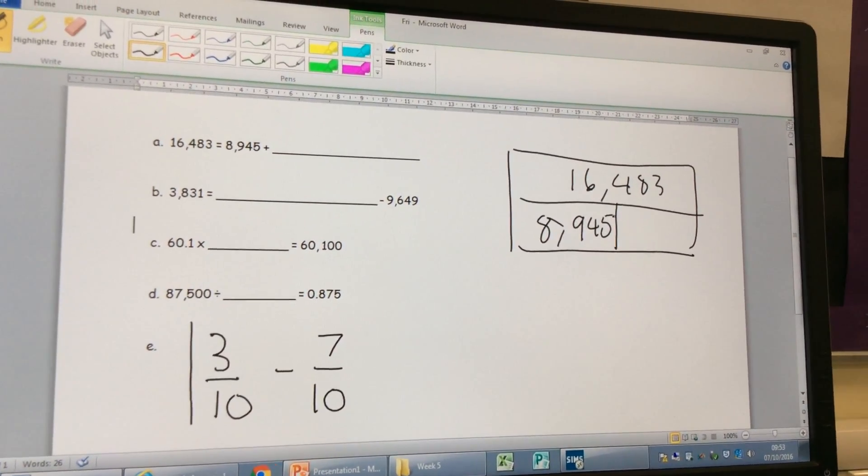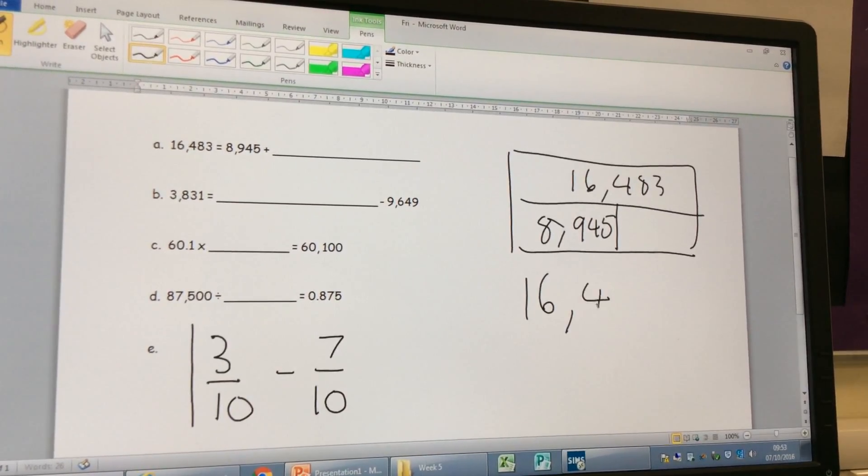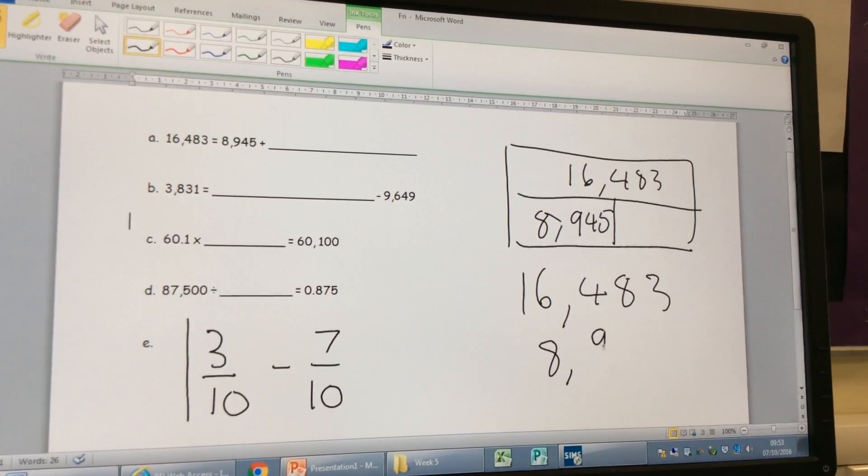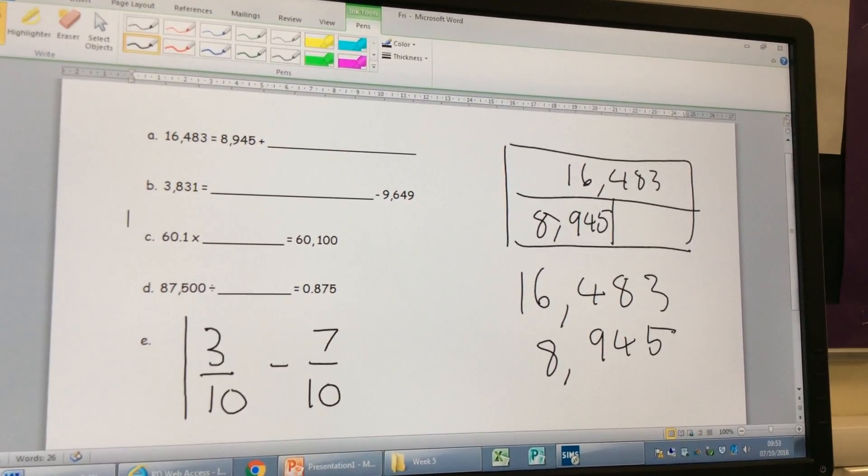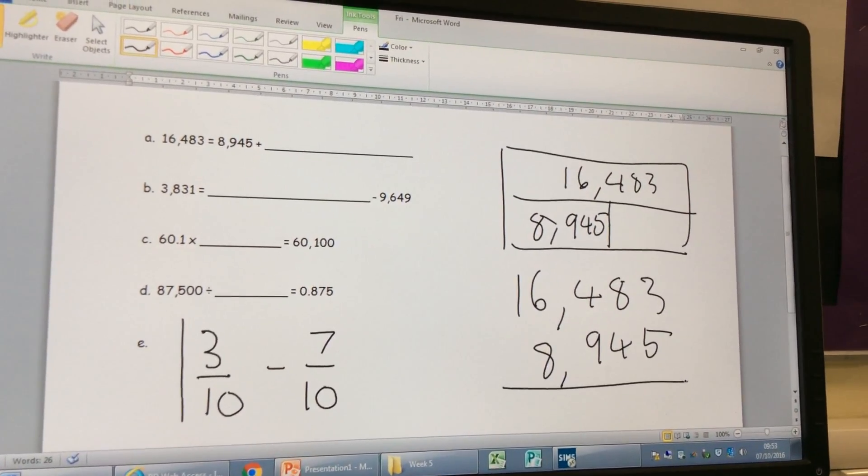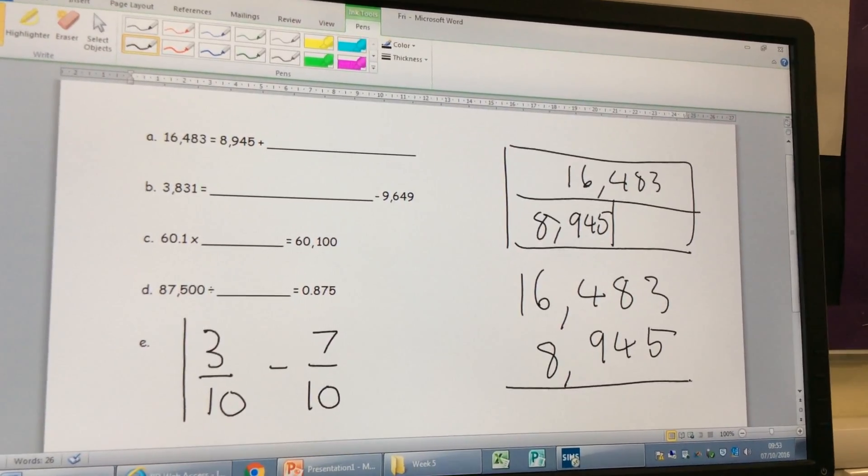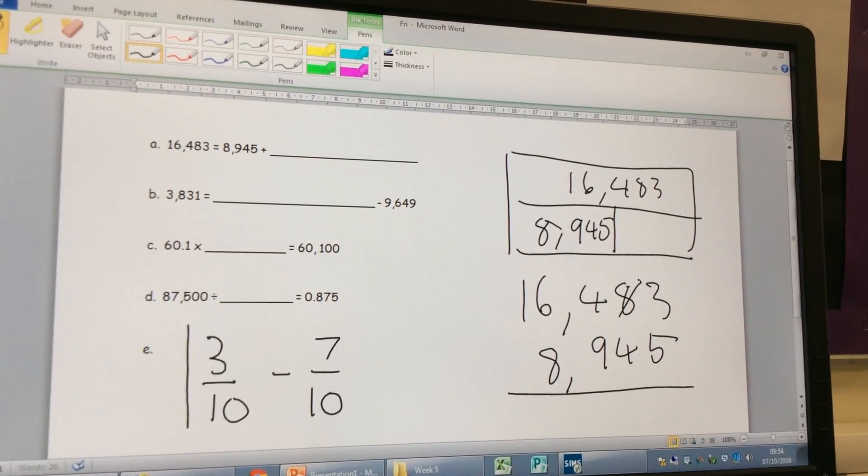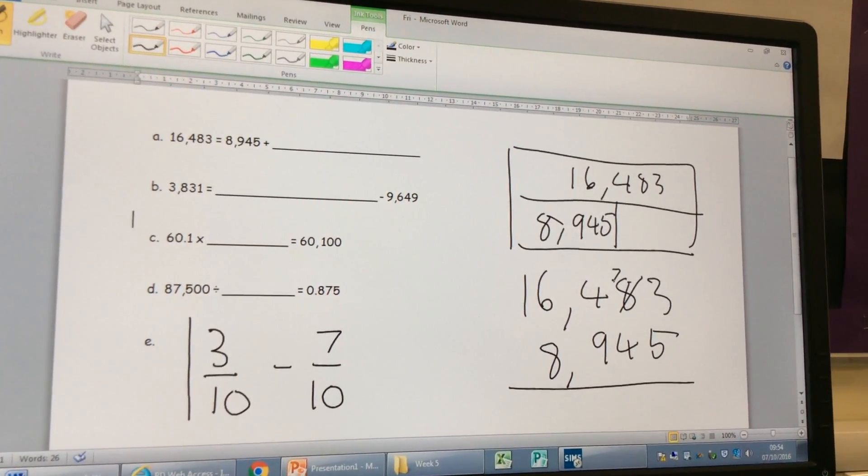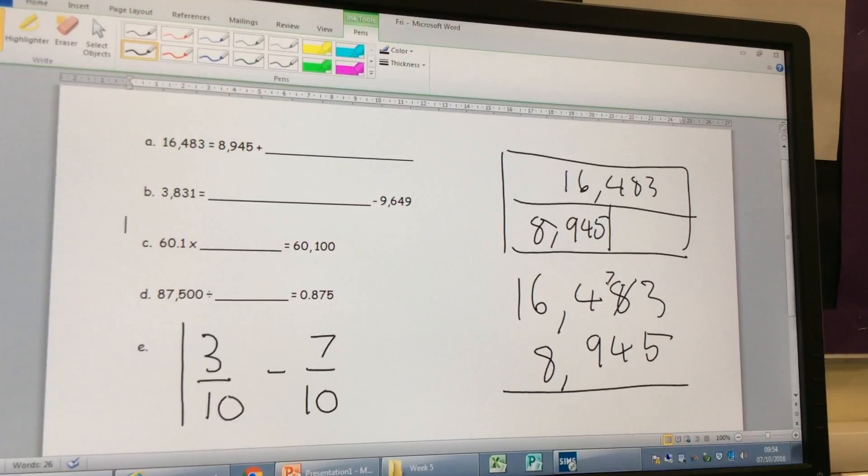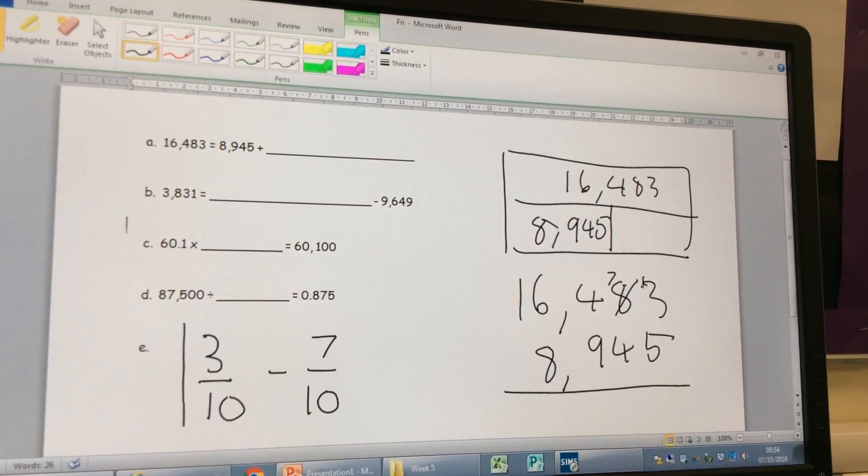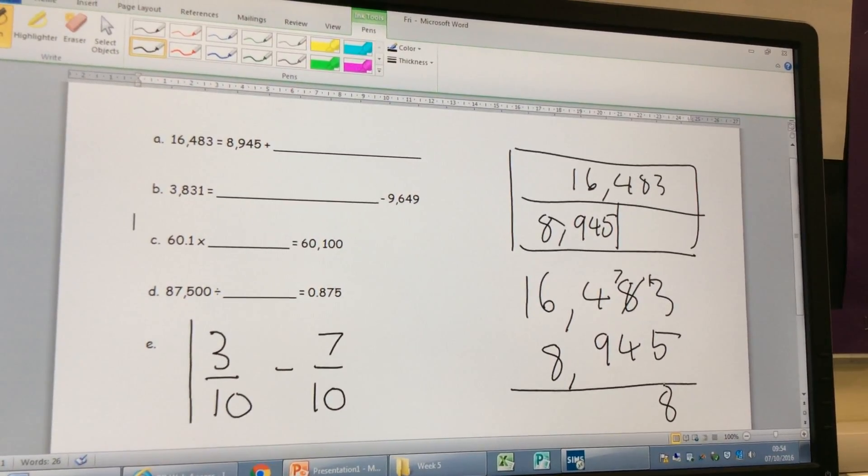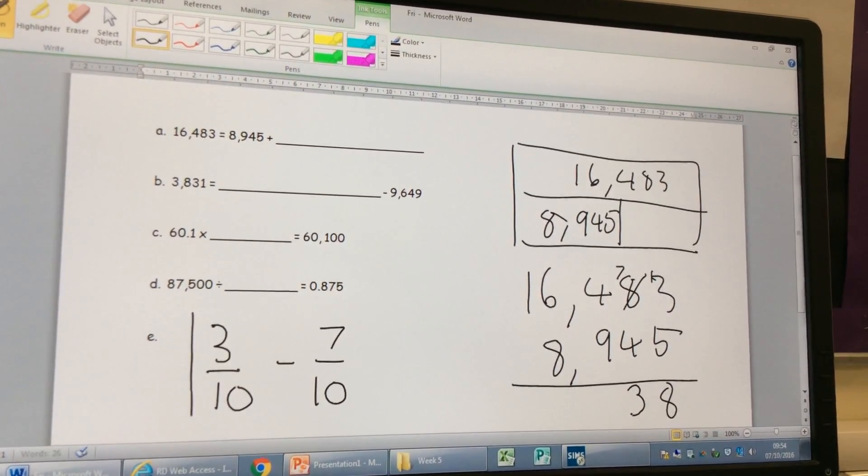So, who can tell me what I'm going to need to do if I put it on the board like this? Who's ready to do it for me? Matthew, start me off. You need to do 3 takeaway 5, which you can't do. So you need to exchange from the 8 to make the 8 a 7, then you need to put the 1 on the 3. And what's that 1 worth? 10. Yeah, it's 13. Excellent. 13 takeaway 5 is 8. Excellent. And then you need to do 7 takeaway 4, which is 3. And then 4 takeaway 9, which we can't do.